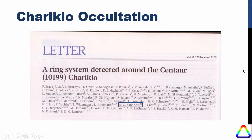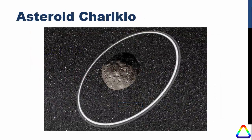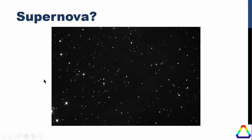One particularly interesting occultation event was the discovery of a ring system around asteroid number 10199, which resulted in an article in Nature magazine. I was very fortunate to be included among the list of authors. This was a case where a whole array of professional and amateur astronomers across South America were observing to determine the nature and extent of the rings around this asteroid, and from all those observations the professional astronomers were able to determine the exact size and nature of that ring system.